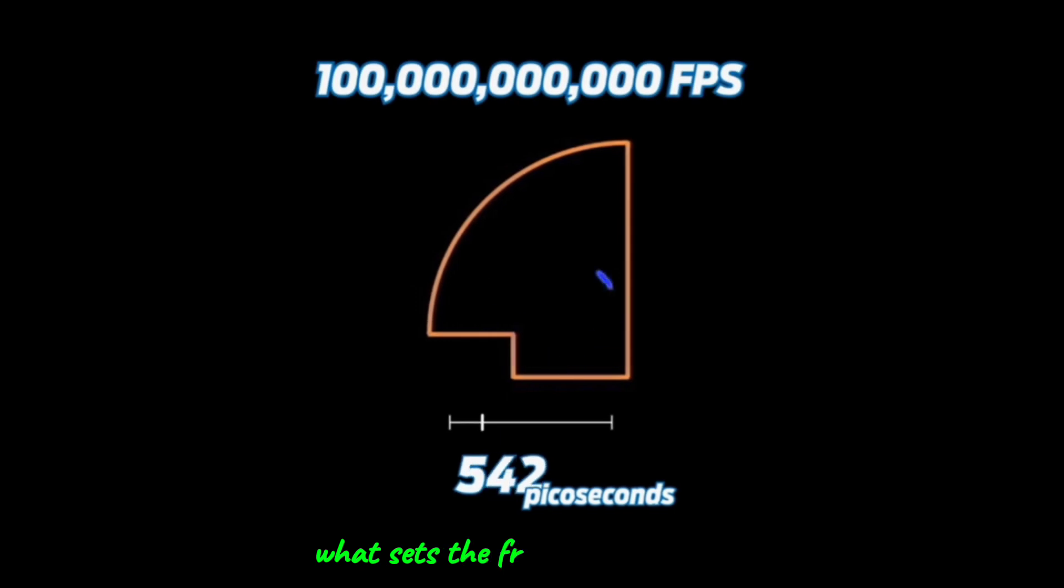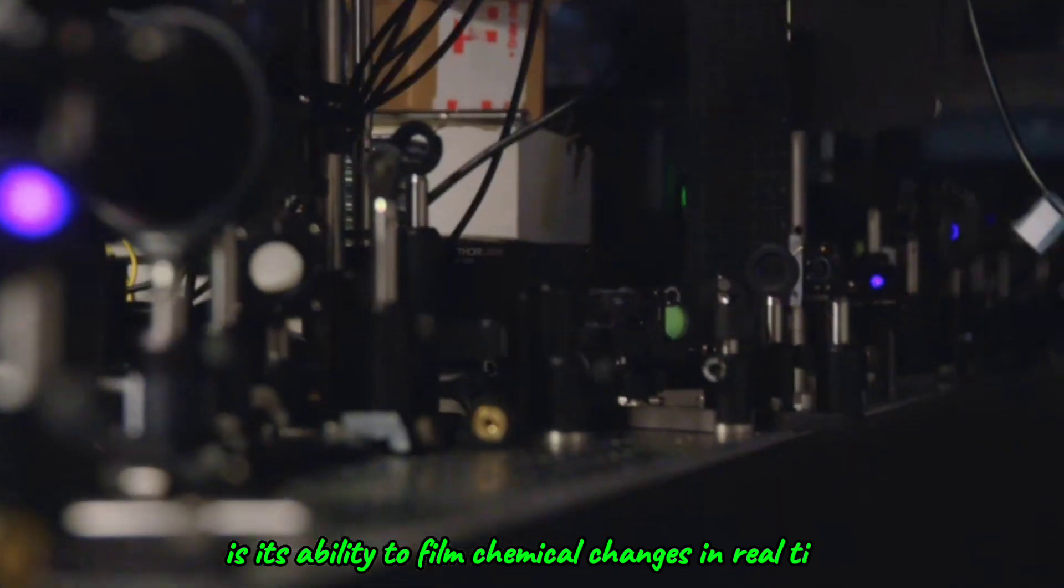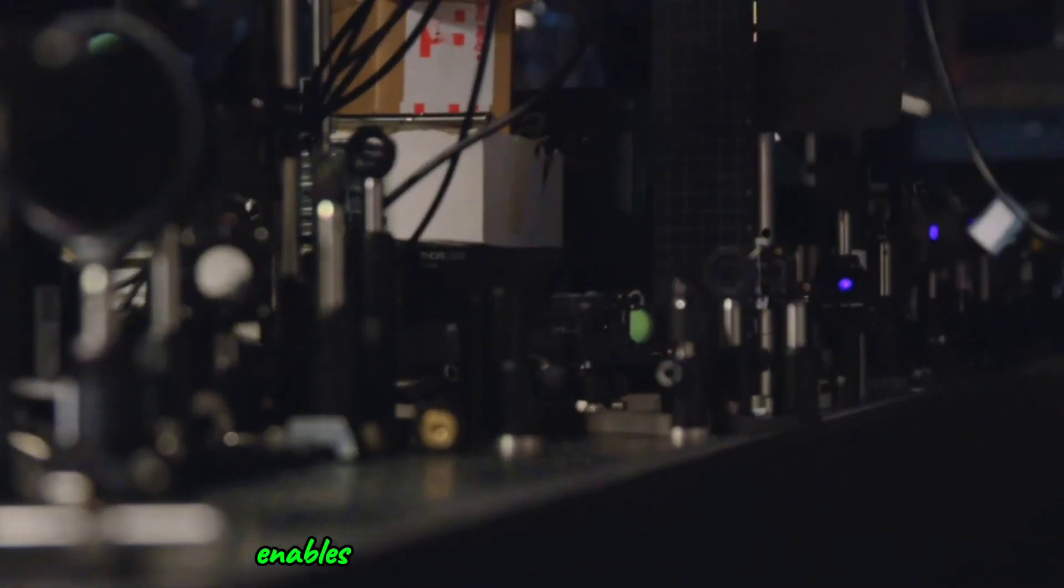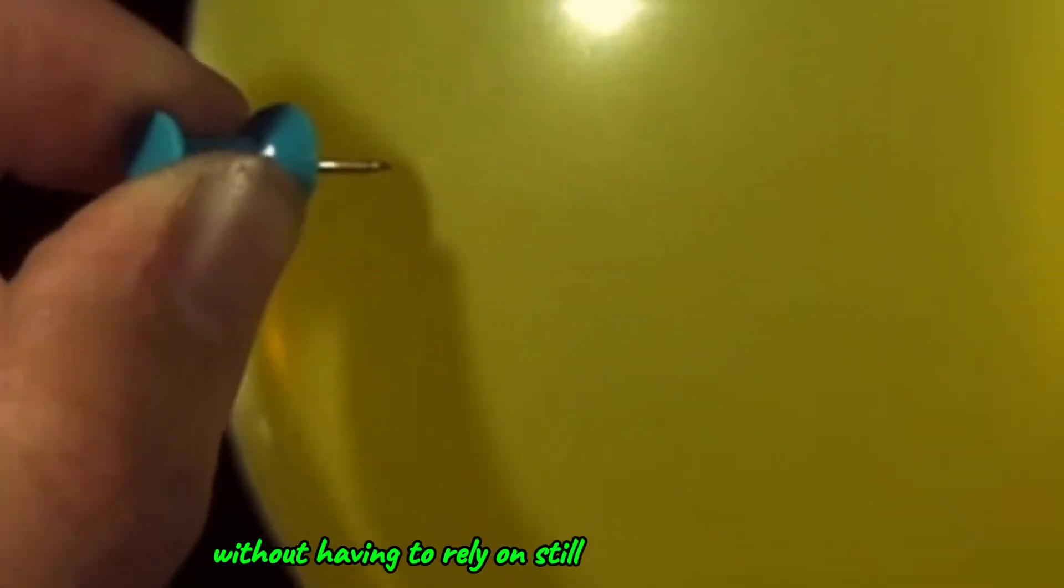What sets the FRAME camera apart, beyond its record-breaking speed, is its ability to film chemical changes in real time. This capability enables researchers to visualize rapid events without having to rely on still images of the process.